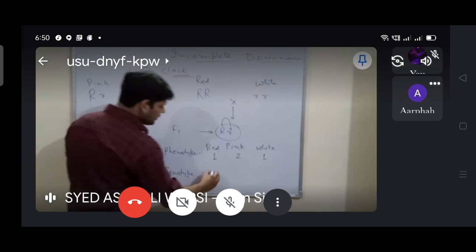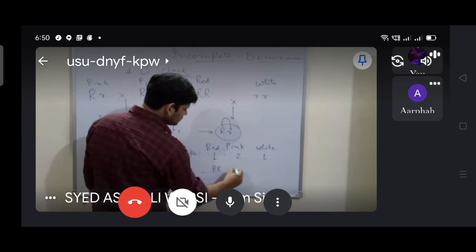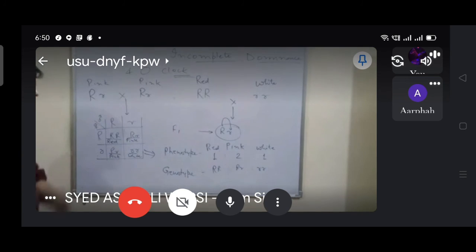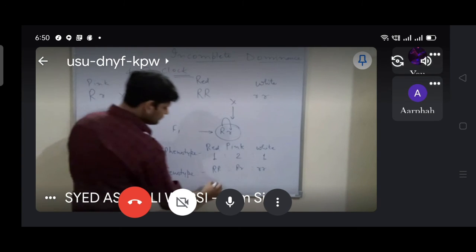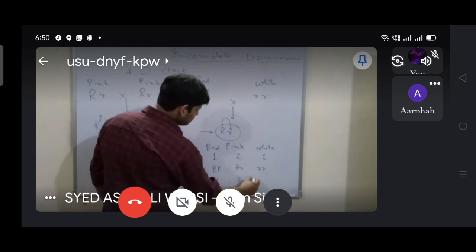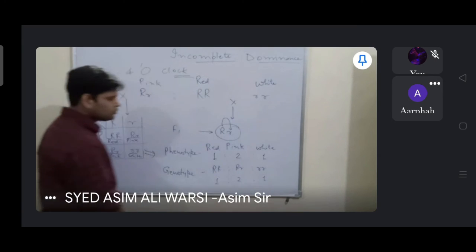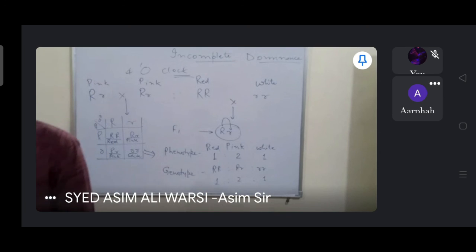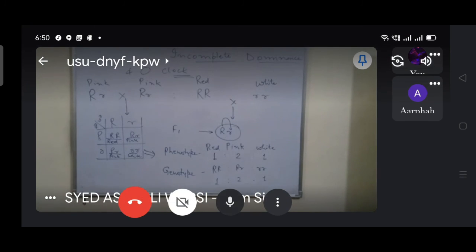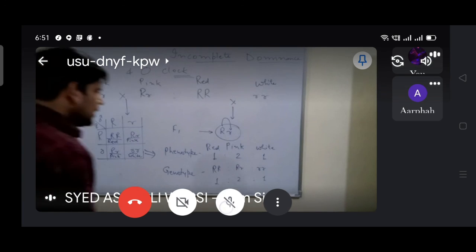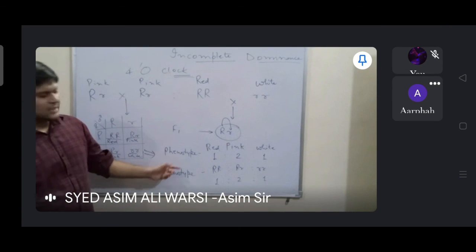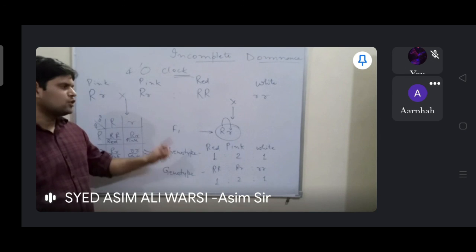What is the phenotype? Genotype ratios 1 is to 2 is to 1. Are all the phenotype of phenotype 2 the same? Yes. In this cross, genotype and phenotype both have the same ratio.